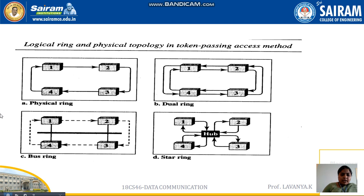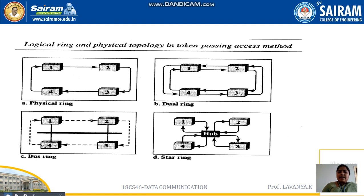The first diagram is the physical ring — all four stations are connected to one channel. Data passes from the fourth device to first, first to second, second to third, third to fourth, and so on — circular ring motion physically. The second diagram is the dual ring format, where data circulates two times or multiple times. Each device takes care of the transaction twice.